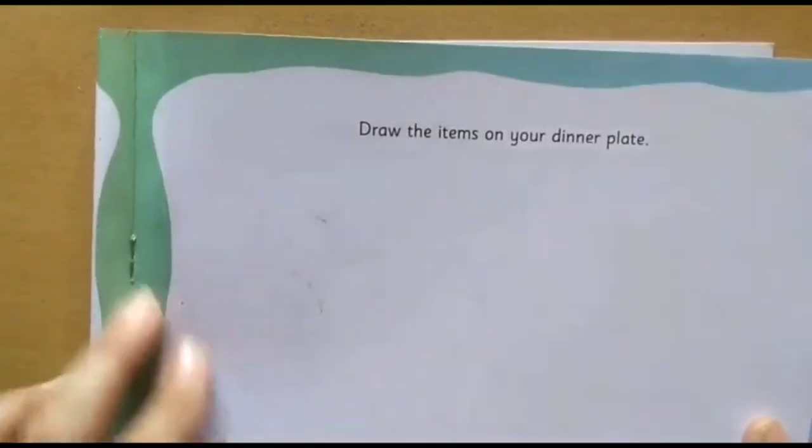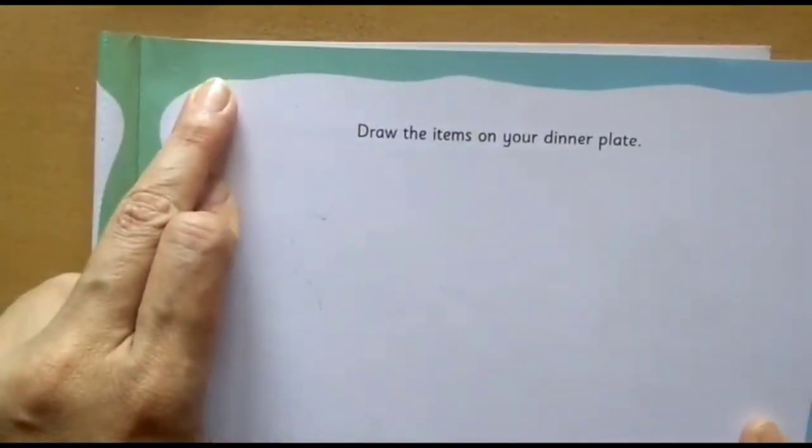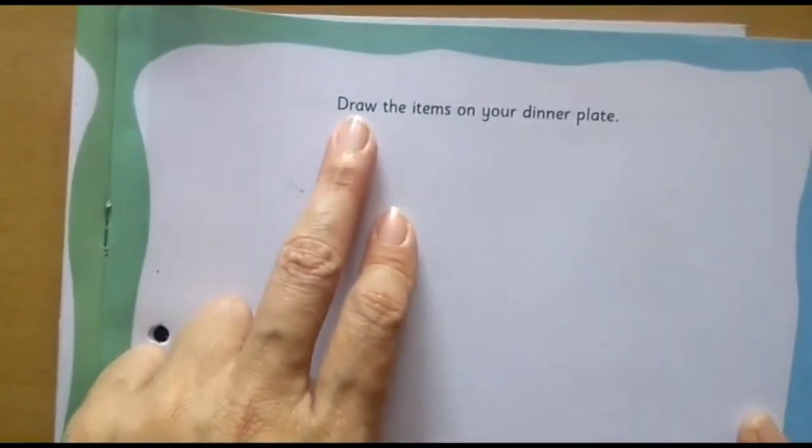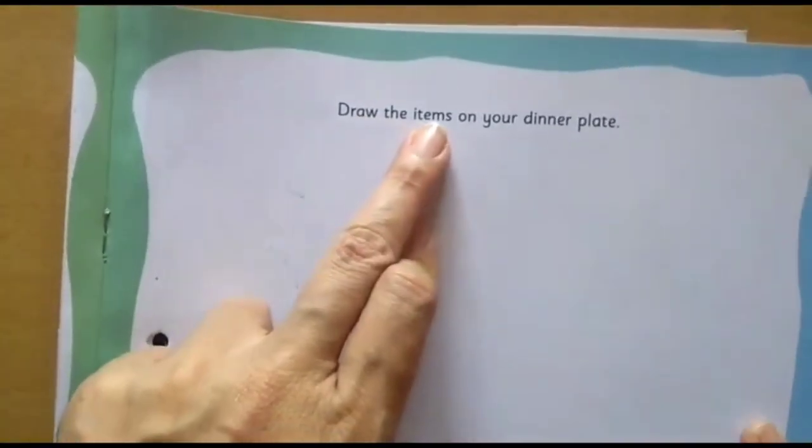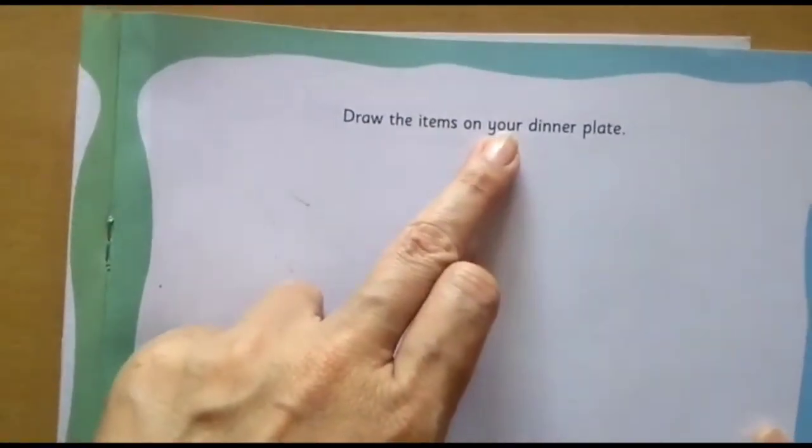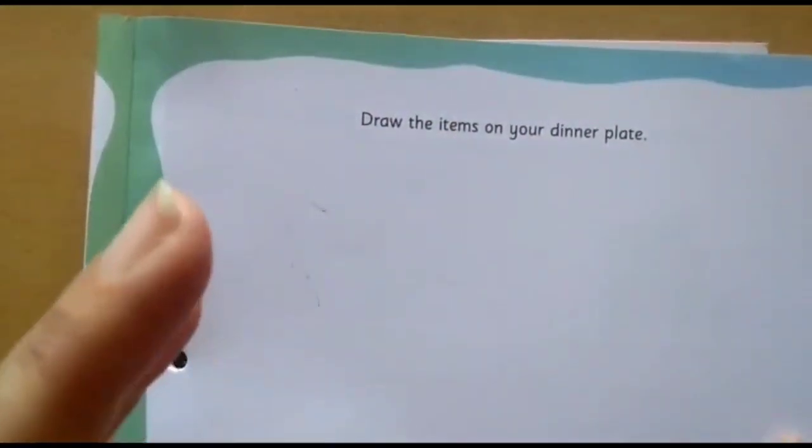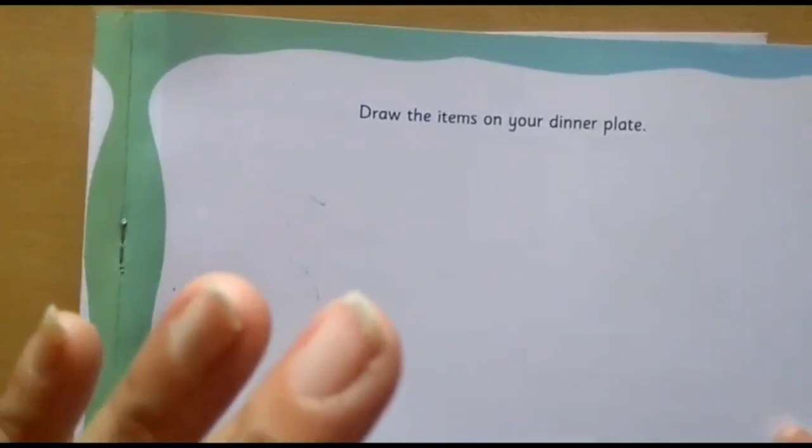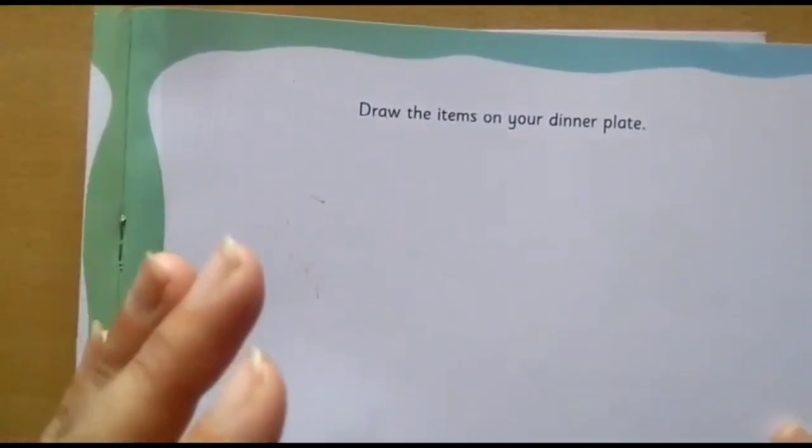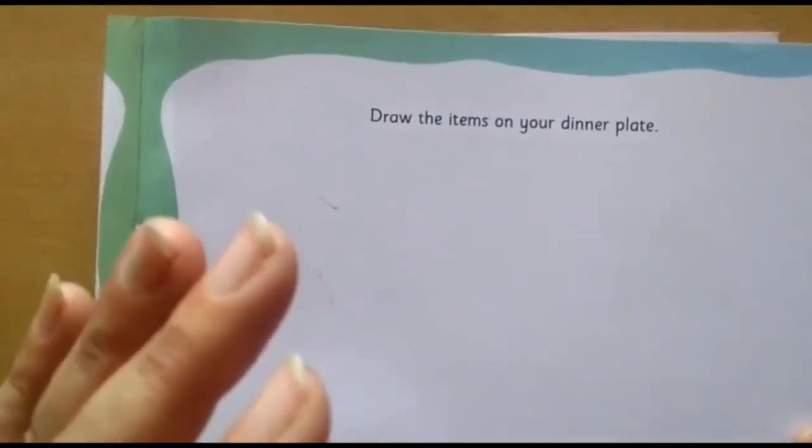As usual on the top left corner, you have to write today's day. Now I will read the instruction for you. Draw the items on your dinner plate means you have to draw a dinner plate. Along with that you can keep something what you like as well as something healthy also.